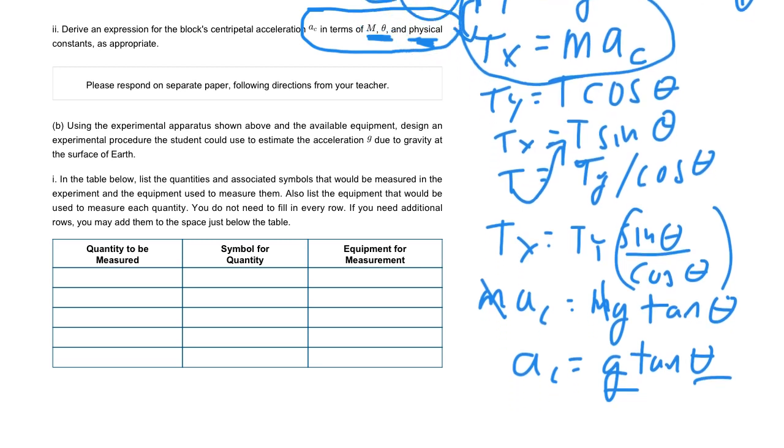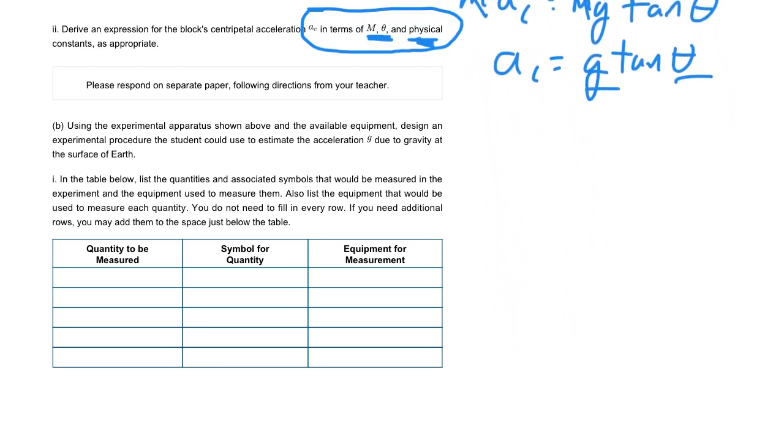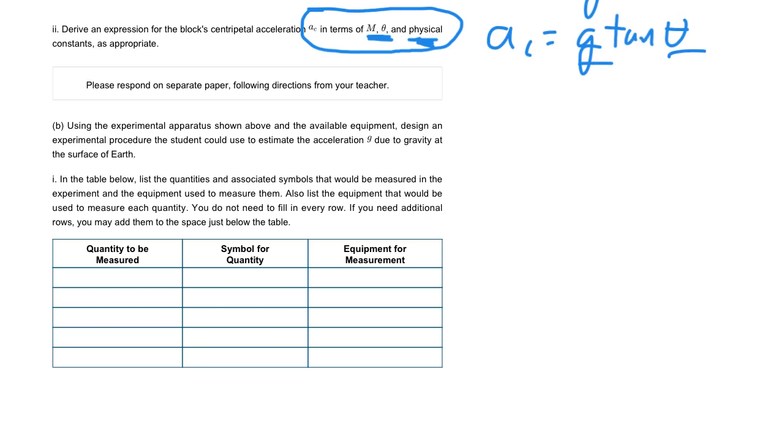The next part of the question is asking to actually design this lab. Let's look at this equation we've just derived: AC equals g tan theta. We're trying to solve for g. Remember in the original question they said to graph it to solve for g. If we rearrange this, we have g equals AC over tan theta. If we want to make a graph, we somehow need to have g - this could be our graph. AC could be our y-axis and then tan theta could be our x-axis.